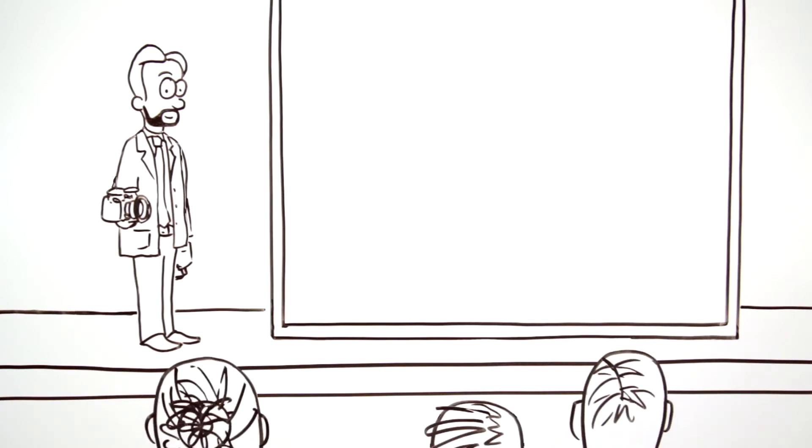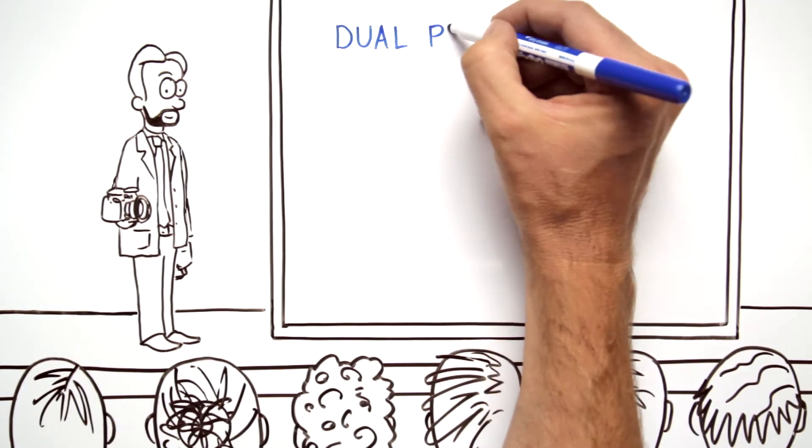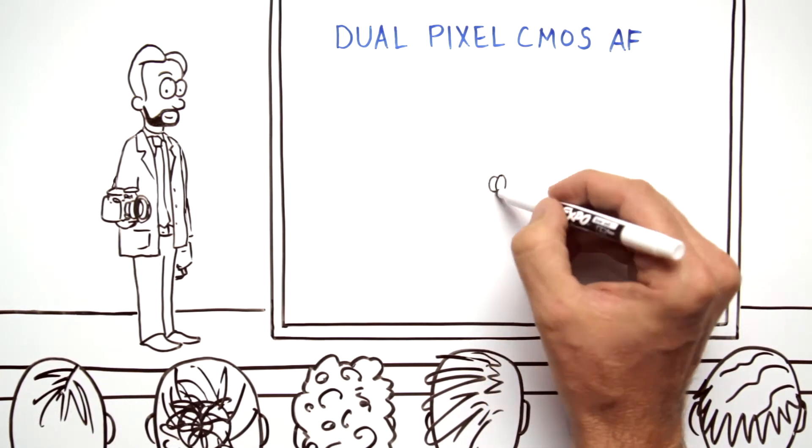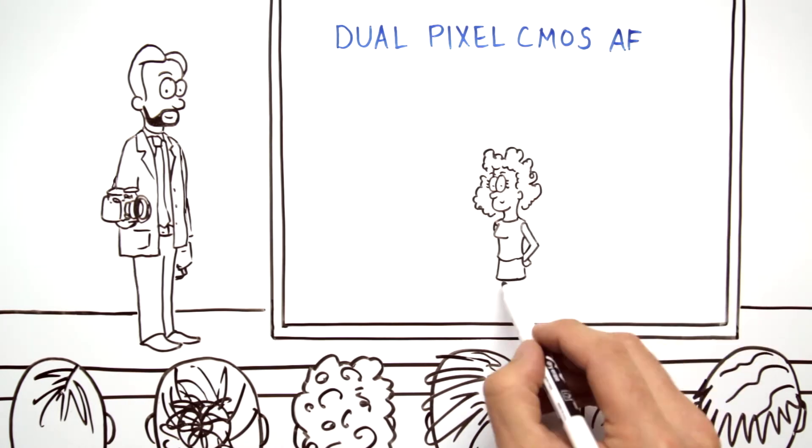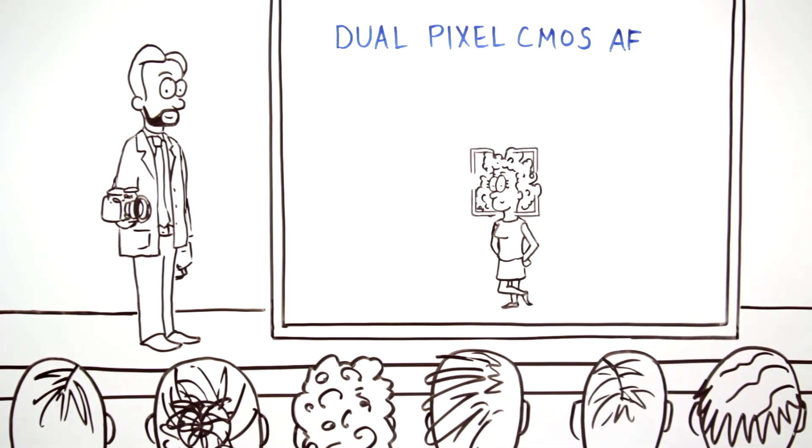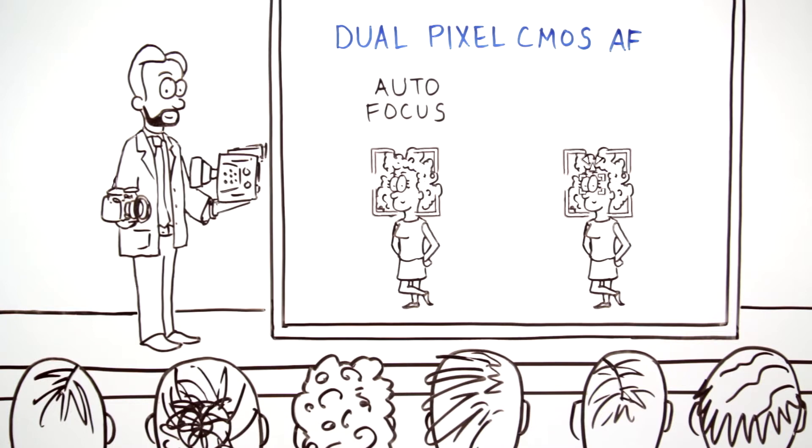Well Canon is now changing all that with dual pixel CMOS autofocus, a cutting-edge one-of-a-kind solution that gives filmmakers truly stunning autofocus capabilities, as well as a powerful manual alternative, focus guide.